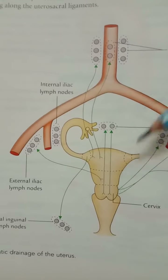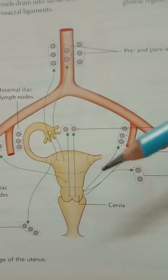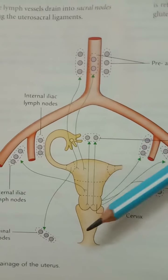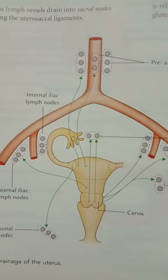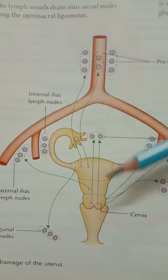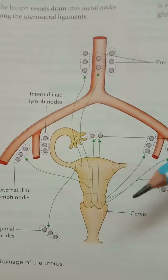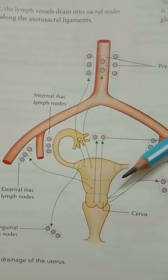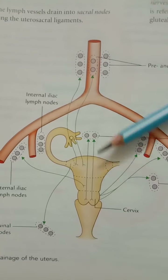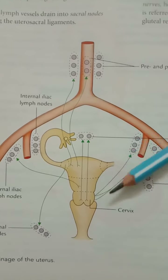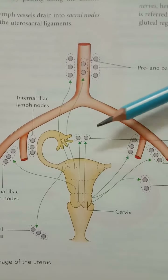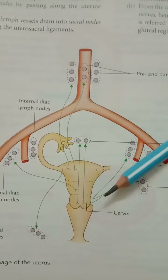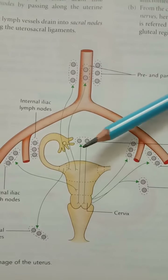The uterus is richly innervated by both sympathetic and parasympathetic nerve fibers. The sympathetic fibers are derived from the T12 to L2 spinal segments and cause contraction and vasoconstriction of the uterus. The parasympathetic fibers are derived from S2, S3, and S4 spinal segments and inhibit the uterine muscle and cause vasodilation.